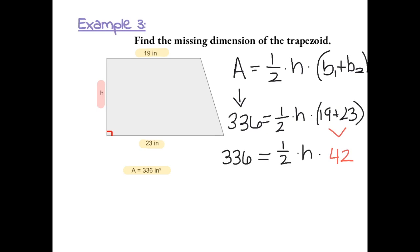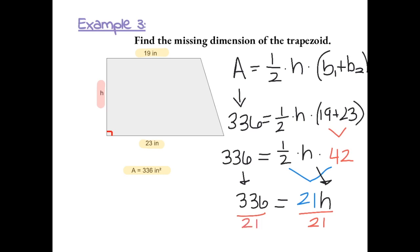Next, we can simplify one-half times 42. Half of 42 gives us 21. So we have 21h equals 336. Now we divide both sides by 21 using inverse operations to get h by itself, since h is being multiplied by 21. The inverse is to divide by 21 — we cancel these out and we're left with h equals 336 divided by 21.